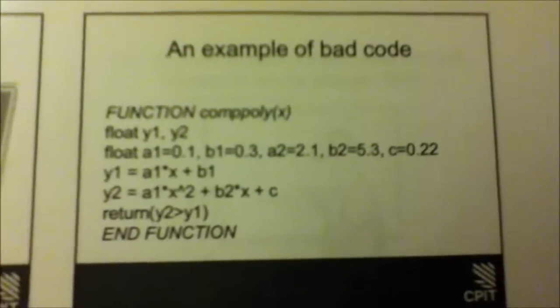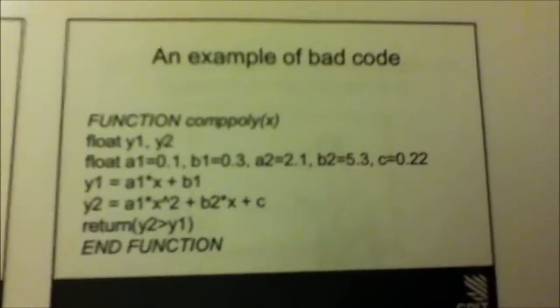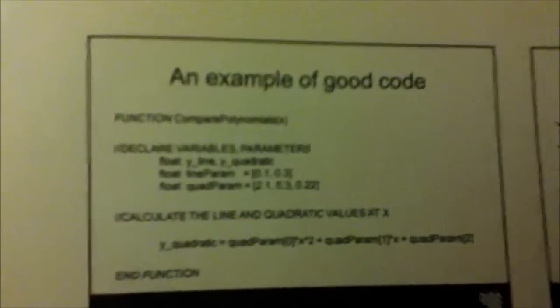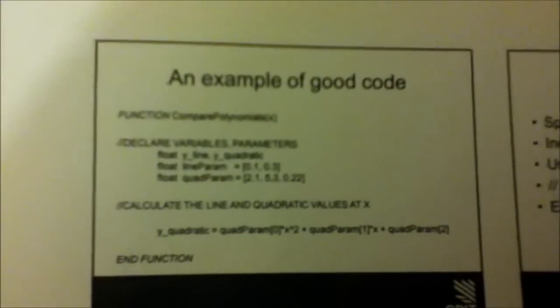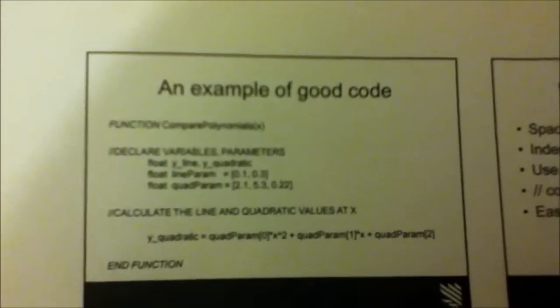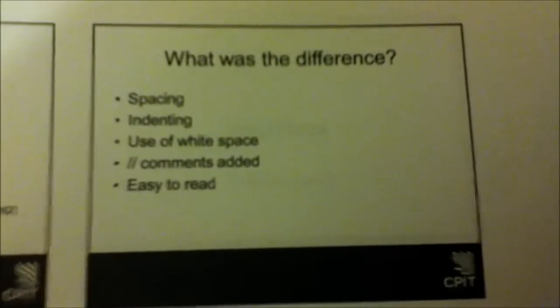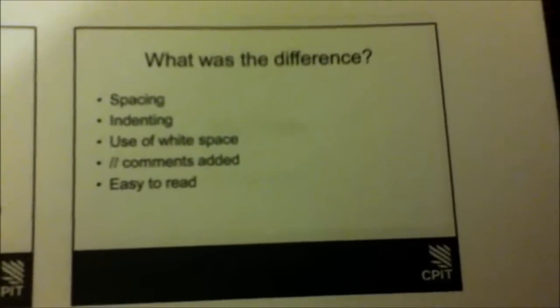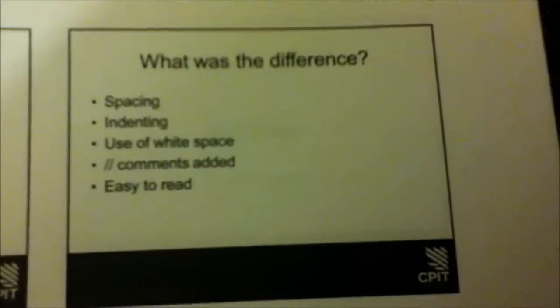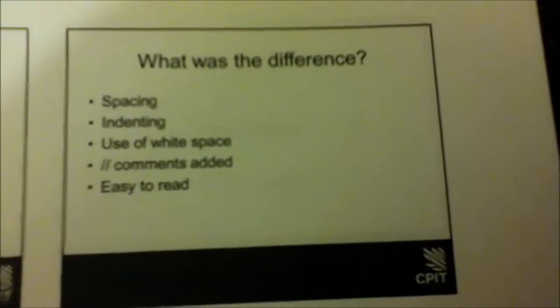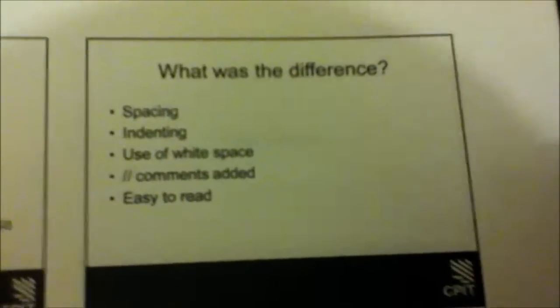Here's an example of bad code — yeah, it's pretty shocking. And here's an example of good code. What's the difference? Spacing, indenting, use of white space, comments added — easy to read.